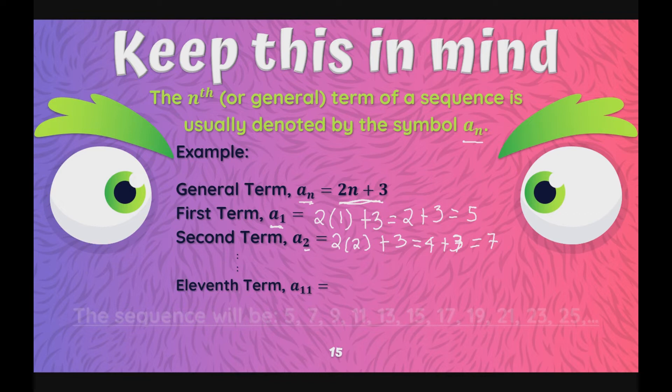Paano yun? The same process na ginawa natin, palitan lang natin yung n ng 11. Dahil pang 11th term yung hinahanap natin, add tayo ng 3 which is equal to 2 times 11 is 22 plus 3. The 11th term will be 25.